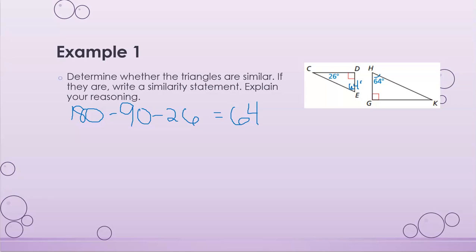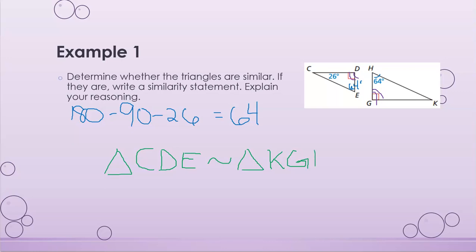I know the right angles are also congruent. So I now have two pairs of congruent angles. I write my similarity statement: triangle CDE is similar to triangle KGH, matching up my angles in the order that they are congruent. The angle matching C is K, the angle matching D is G, and the angle matching E is H.